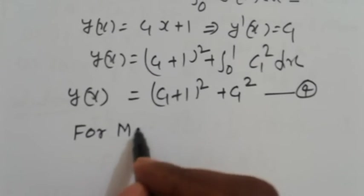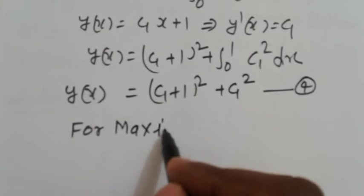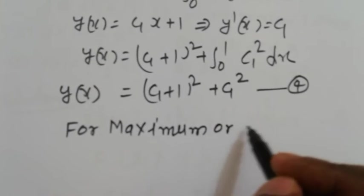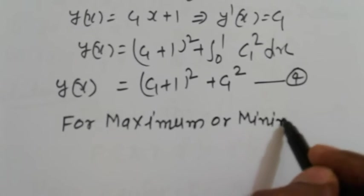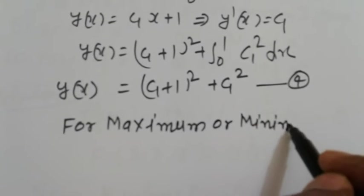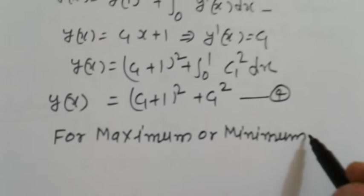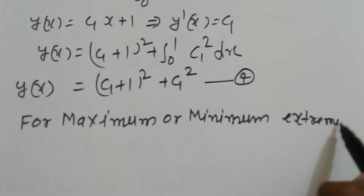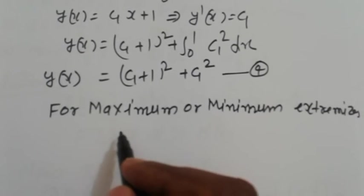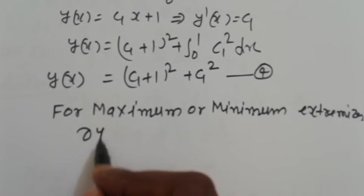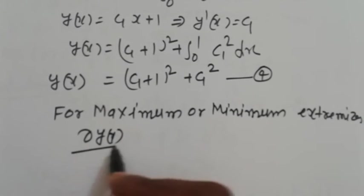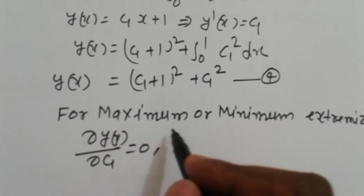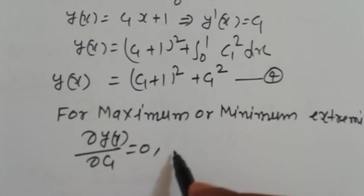For maximum or minimum extrema: ∂y(x)/∂C₁ = 0.